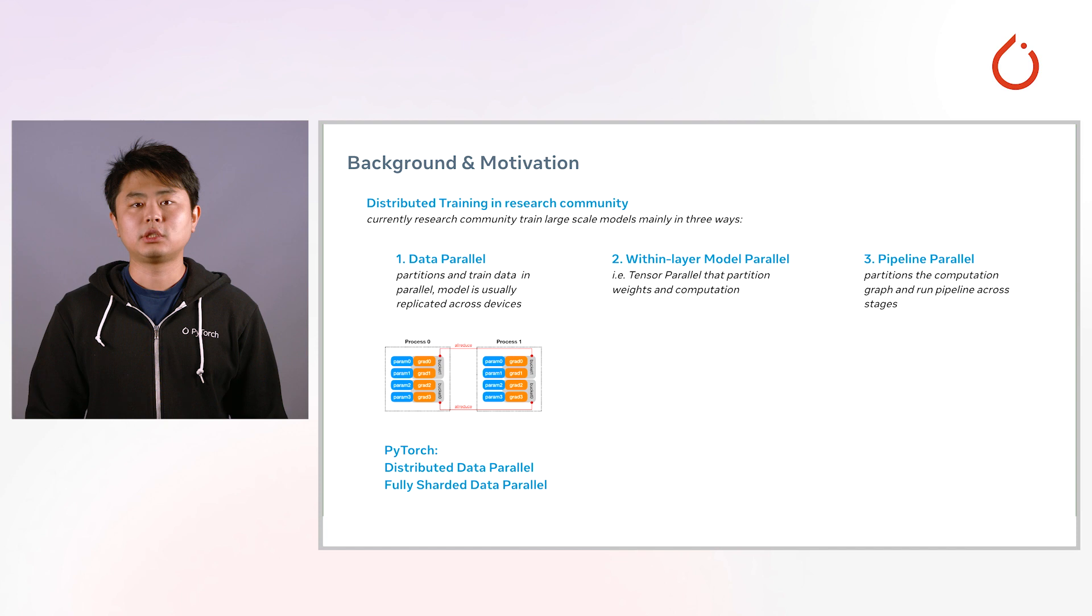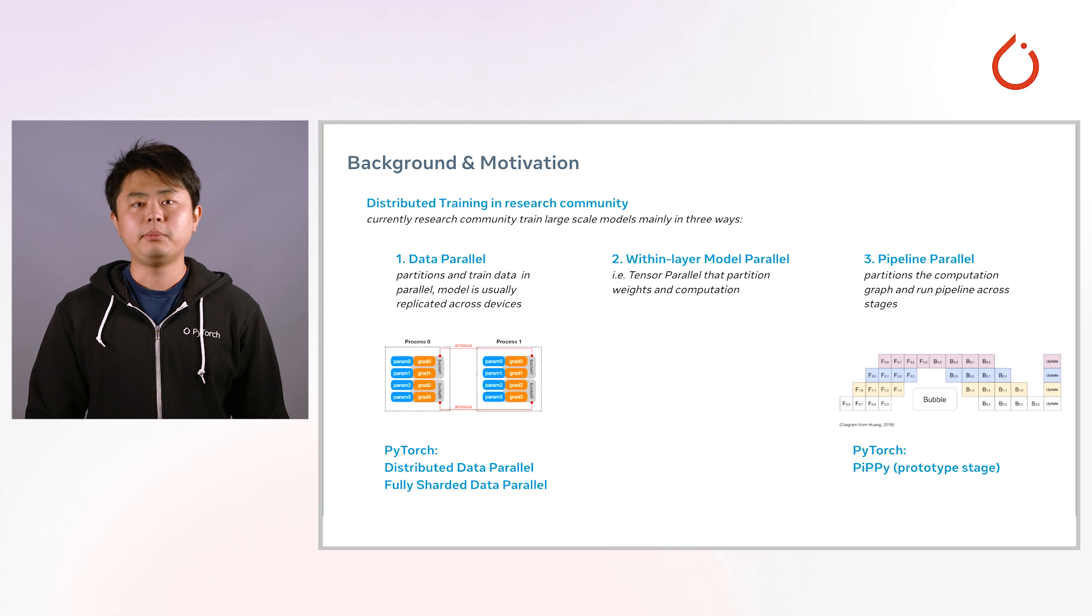In PyTorch, for data parallel, we are offering distributed data parallel and fully sharded data parallel to train large-scale models. For pipeline parallel, we are offering PP, or pipeline parallel solution, which is currently in the prototype stage.